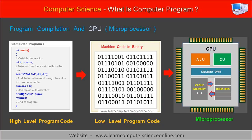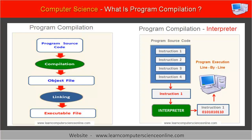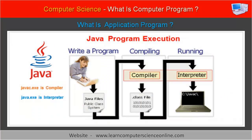In the case of interpreted language, the interpreter converts the source code into intermediate code. Another system program then converts this intermediate code into the native machine code. Therefore, the execution process is relatively slower in the case of interpreted language. For example, the Java program compiler first converts the Java program source code into an intermediate byte code, which is platform independent. The Java Virtual Machine (JVM) then converts this intermediate byte code into the native machine code.